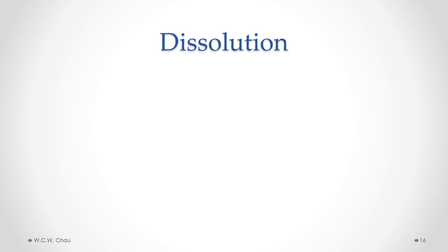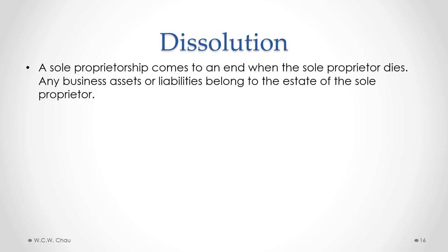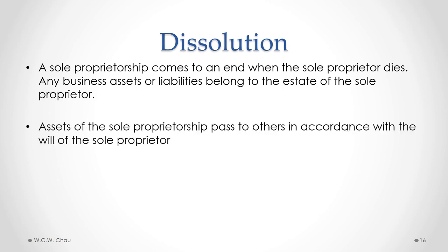Since a sole proprietorship is not a separate legal entity, when the sole proprietor dies the sole proprietorship comes to an end — it cannot go beyond the death of the one owner. Any business assets or liabilities that exist at the time of death are automatically passed on to the estate of the sole proprietor. The estate takes care of paying those liabilities, and if any assets remain after debts are paid, they are transferred to the people named in the will of the sole proprietor.